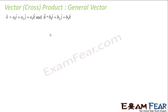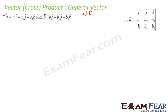Let us compute the cross product for general vectors. I have vector A = A1î + A2ĵ + A3k̂ and vector B = B1î + B2ĵ + B3k̂. I have to find A×B. The result will come out in a matrix form with î, ĵ, k̂ in the first row, A1, A2, A3 in the second row, and B1, B2, B3 in the third row. Let me prove this.